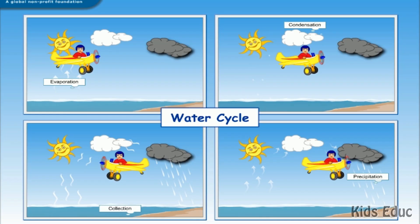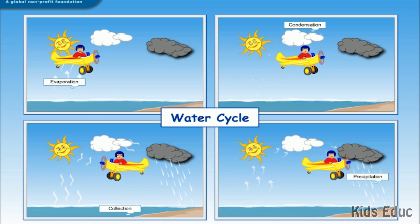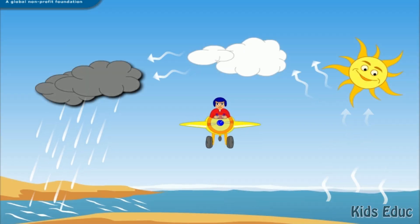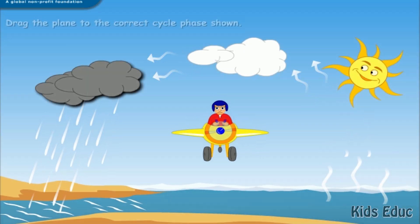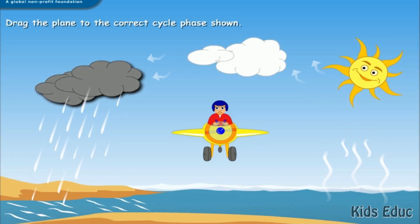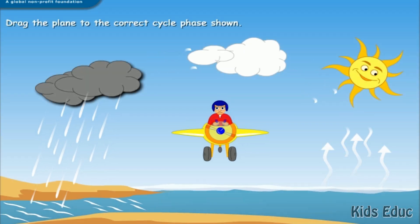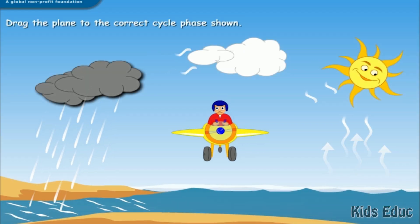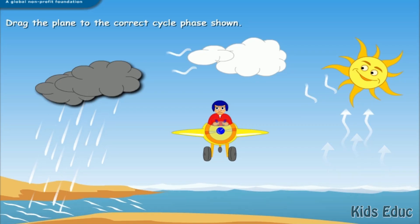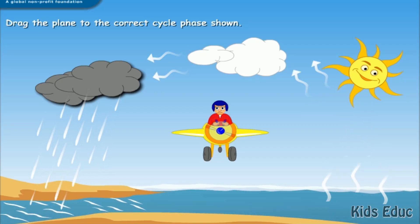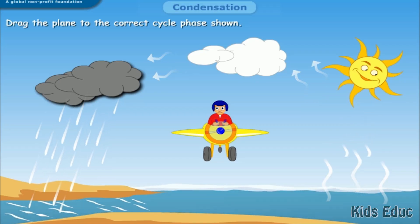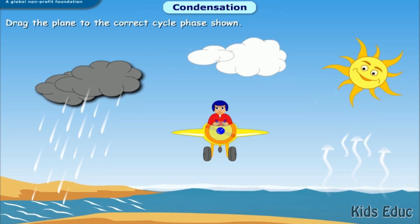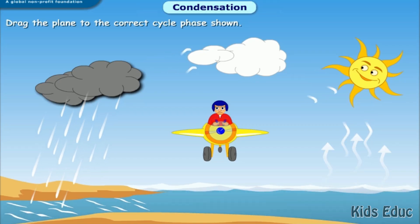Let's try out an activity now. When you see the phase of a cycle appear, drag the plane to the correct action on the page. Drag the plane to condensation.